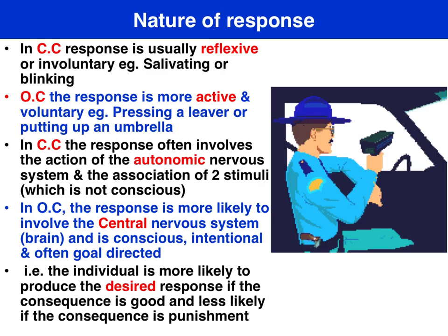In terms of the nature of the response, for classical conditioning the response is generally reflexive. For instance, Pavlov's dog salivating at the sound of a bell in anticipation of food. The key point is the response is often controlled by the autonomic nervous system — whether it be salivation, an eye blink, a fear or anxiety response to a phobic stimulus, etc.